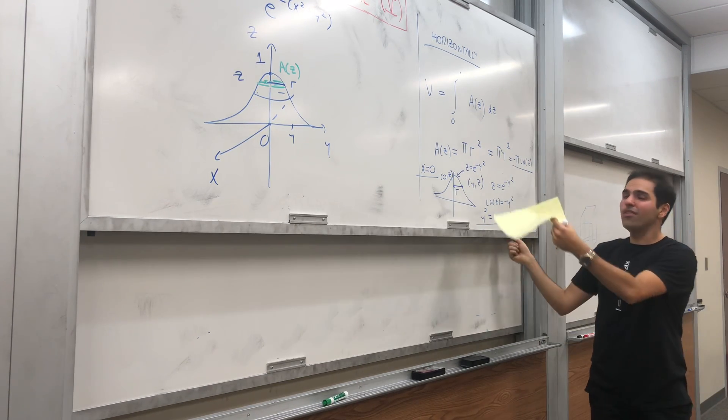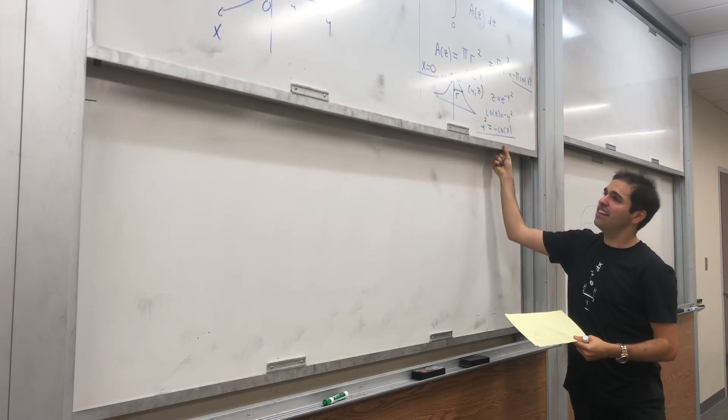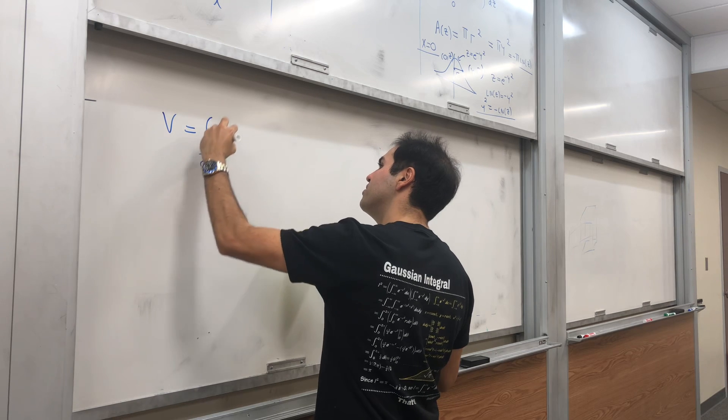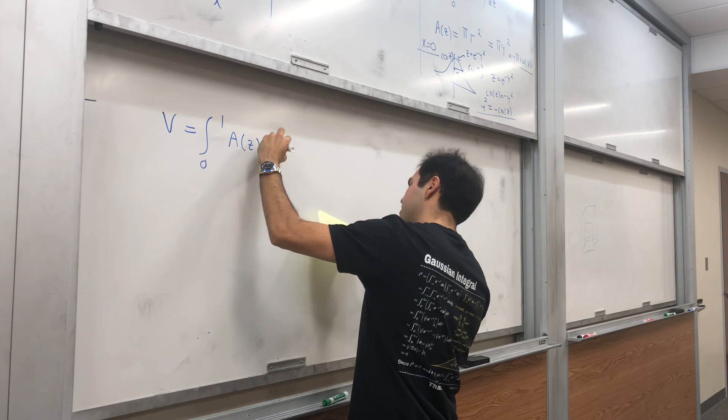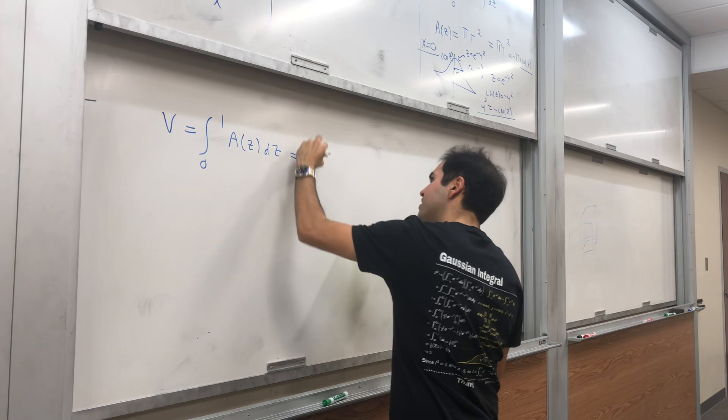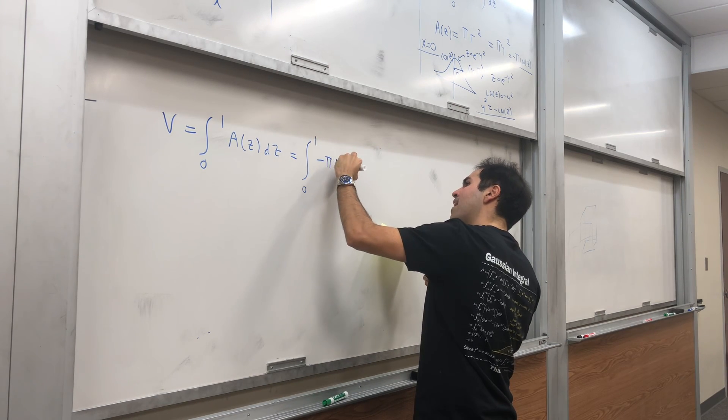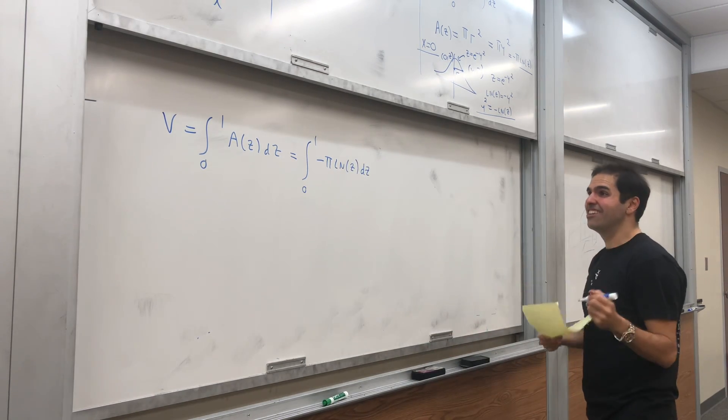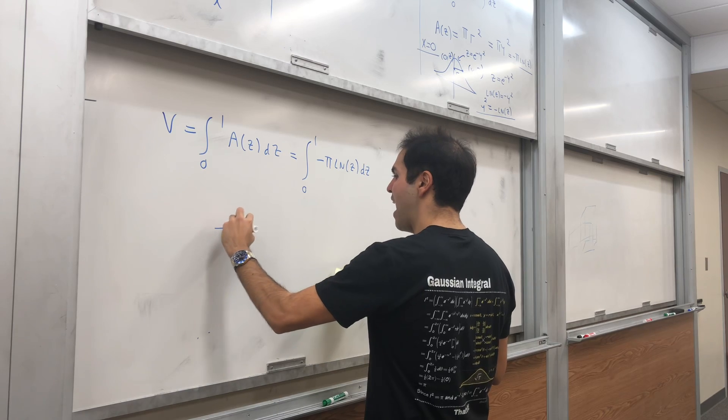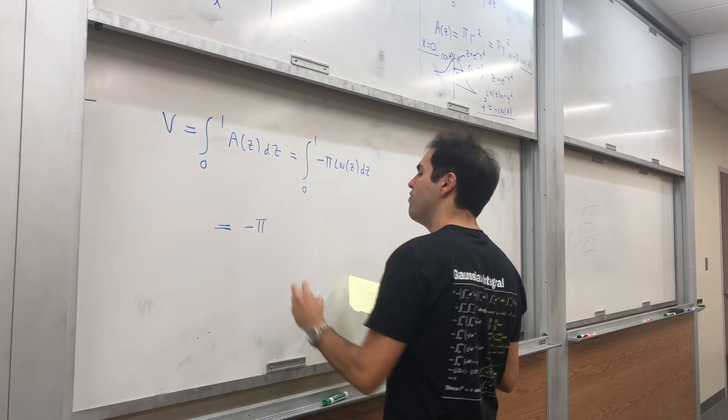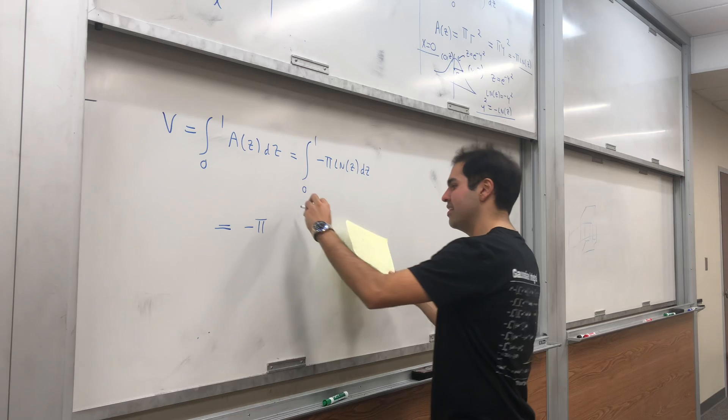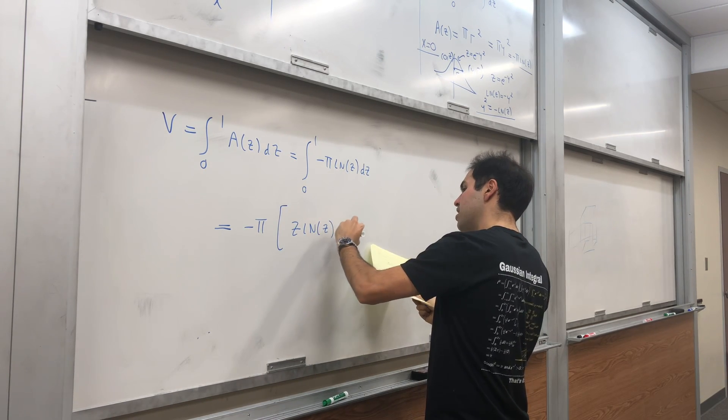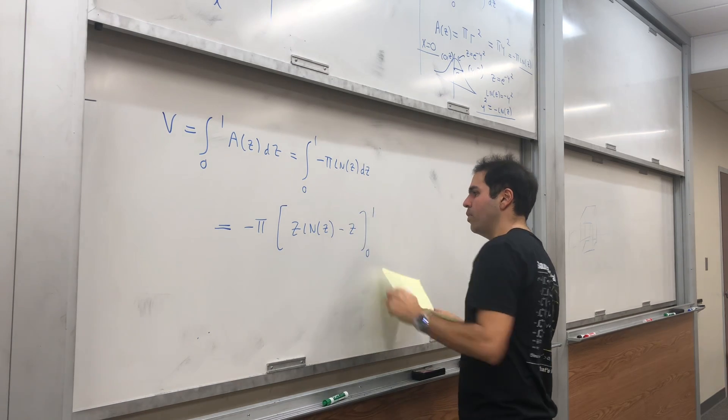So on the one hand, the area is -π ln(z). To find the volume, we integrate that. The volume is the integral from 0 to 1 of -π ln(z) dz. The antiderivative of ln is x ln(x) - x, so this becomes -π[z ln(z) - z] from 0 to 1.